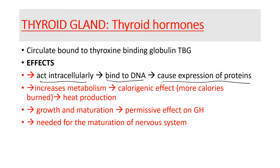Thyroid hormones increase metabolism across the board in every single cell, which means they have a calorogenic effect. Because they increase the metabolism of cells like skeletal muscle cells, which produce heat, we will be burning more calories and producing more heat.